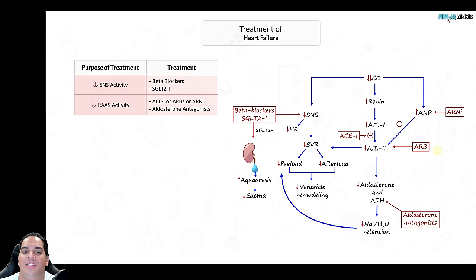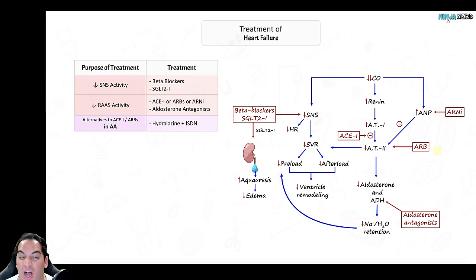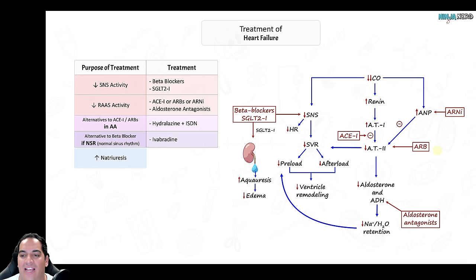Aldosterone antagonists (e.g., spironolactone) block aldosterone directly, reducing sodium and water retention, edema, preload, and ventricular remodeling. Additional guideline-directed medical therapy options include: for African American patients unable to tolerate ACE inhibitors or ARBs, hydralazine plus isosorbide dinitrate provides vasodilation. Ivabradine can be added as an alternative if patients are maxed on beta blockers and in normal sinus rhythm. Loop diuretics and thiazide diuretics help with sodium and water retention.